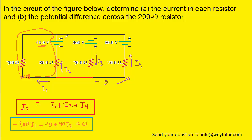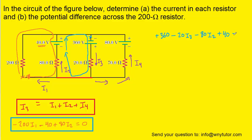We still need a couple more equations, so we'll pick a different loop. Going to the middle portion of the circuit, we can draw a loop that travels in this direction. We pick an arbitrary starting point and move our way through the loop. When we encounter this battery, we're moving from the negative to the positive terminal — that's a positive potential change of 360 volts. Continuing our way through the blue loop, we are flowing with the current passing through this resistor, so that's a negative potential change equal to 20 times I3. We will then turn and come this way, flowing with the current I2 — another negative potential change of 80 times I2. Then we encounter a battery moving from negative to positive terminal — that's a positive potential change of 40 volts. We return to where we started and set it equal to zero. This is our third equation.